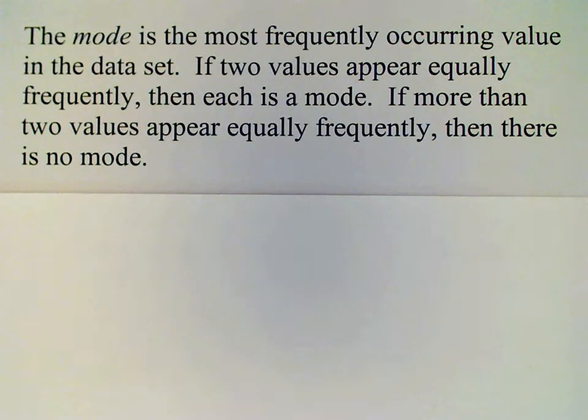Now it's possible that two values appear with the same frequency, and if that's the case, if each of those occurs the most frequently, then each one is considered to be a mode. However, if more than two values appear equally frequently, then the data set is said not to have a mode.